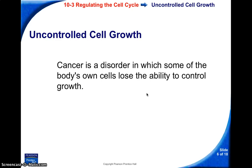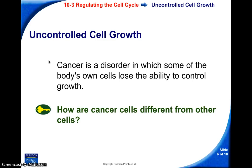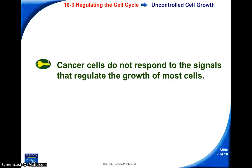So what happens when these regulators lose control? Well, that is cancer. It's basically just a cell or a group of cells that undergo a tremendous amount of uncontrolled cell division. These cells are different from the fact that they don't respond to the signals that regulate the growth of most cells. Those cyclins or proteins that determine cells as they go from one phase of mitosis to another — cancer cells don't listen. They just kind of go off into their own way.